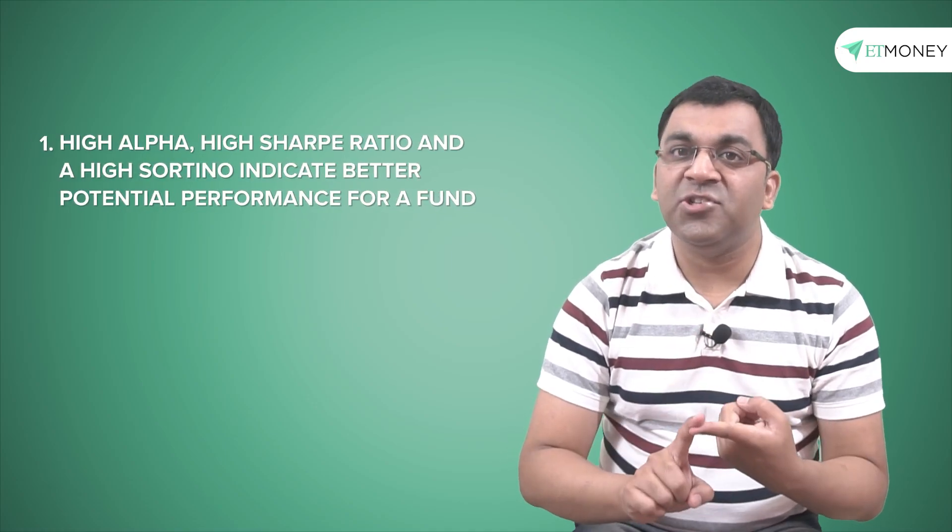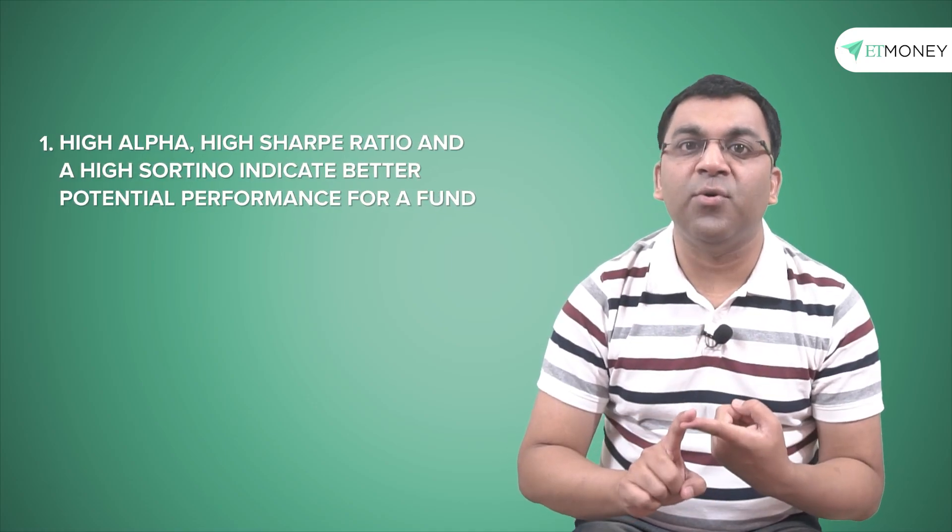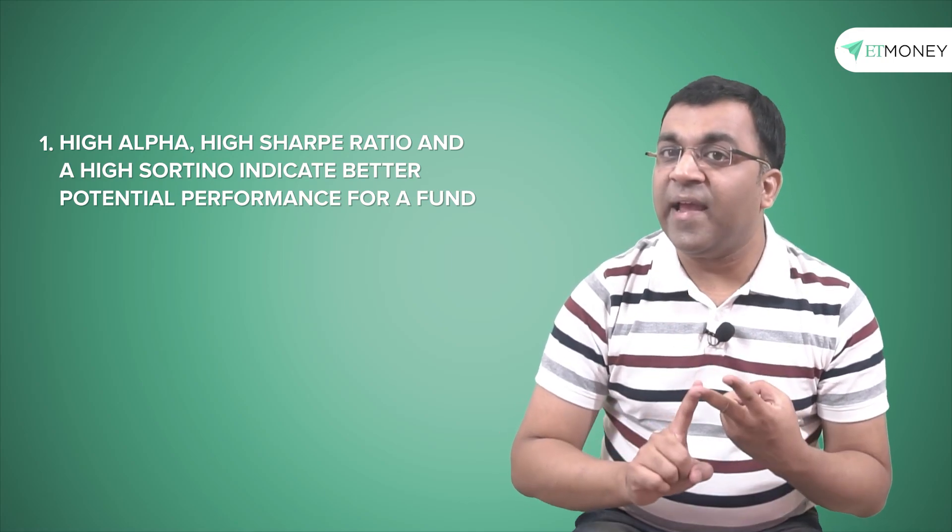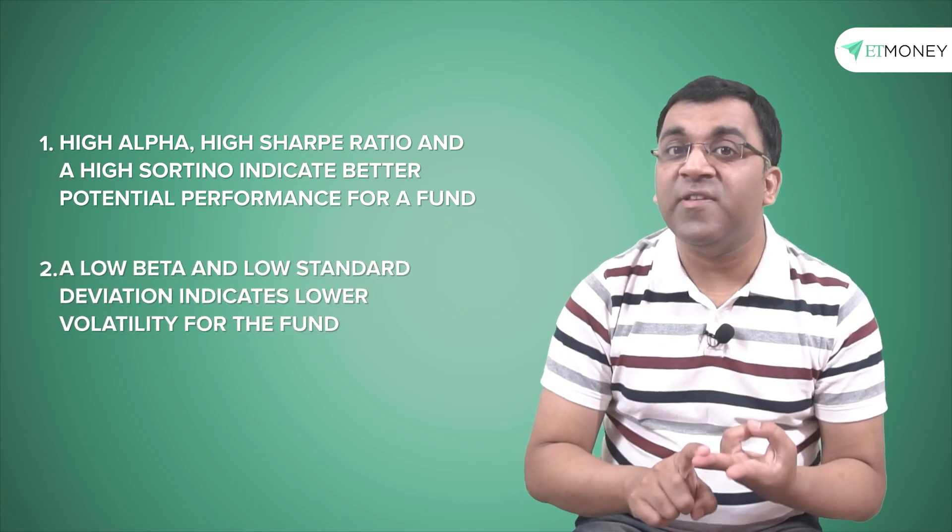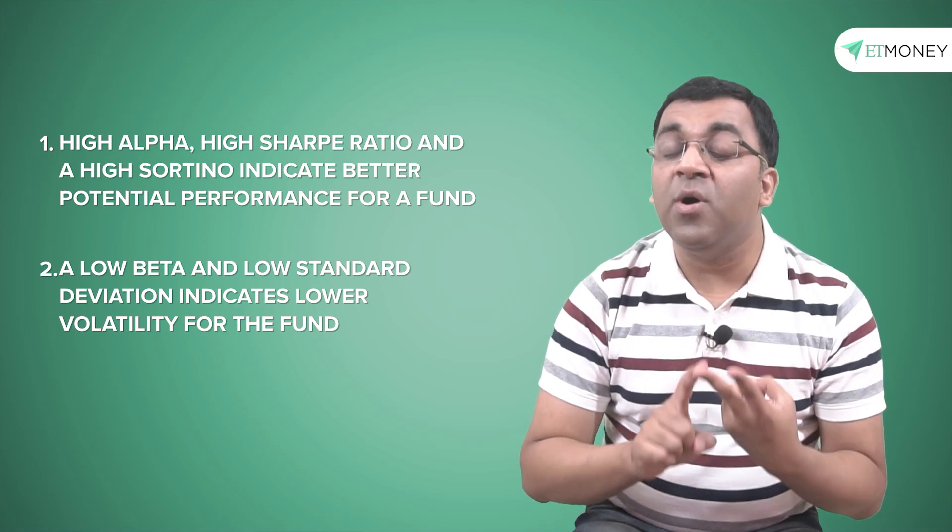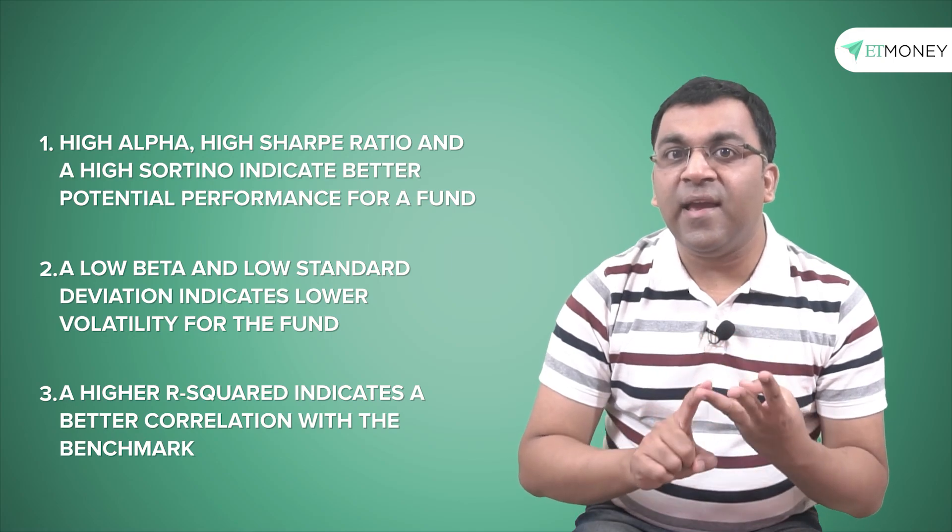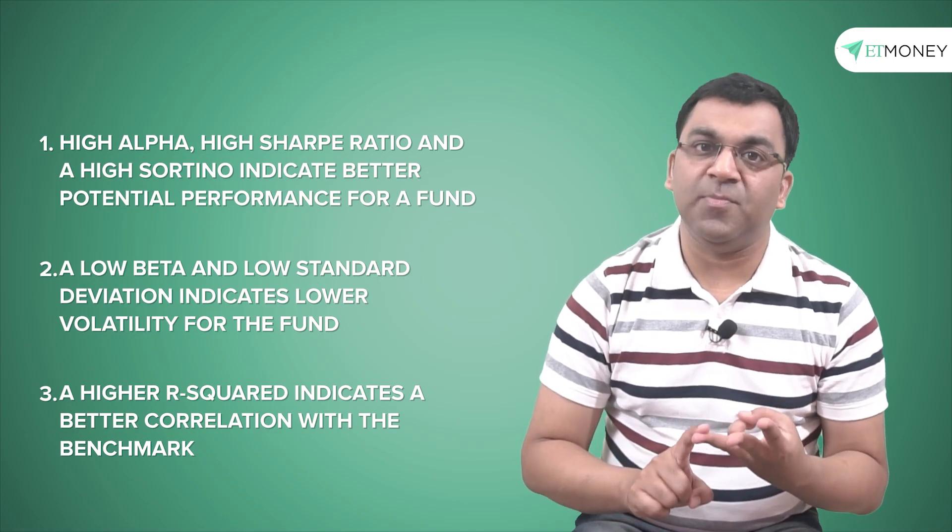To put what we have learned so far in a most simple context: firstly, a high alpha, a high Sharpe ratio and a high Sortino indicates better potential performance for a fund. Secondly, a low beta and a low standard deviation indicates lower volatility for the fund. And finally, a higher R-squared rate indicates a better correlation with the benchmark.